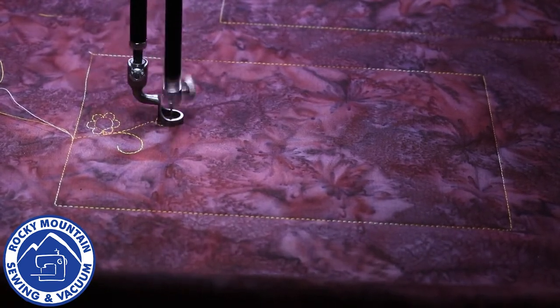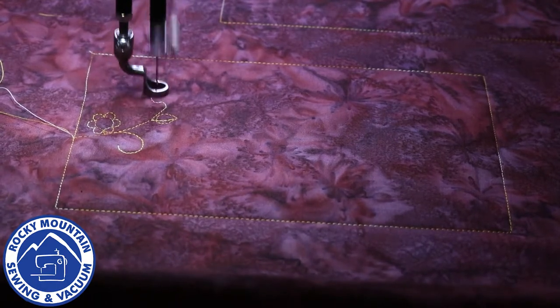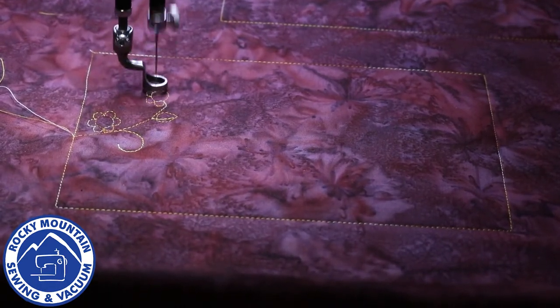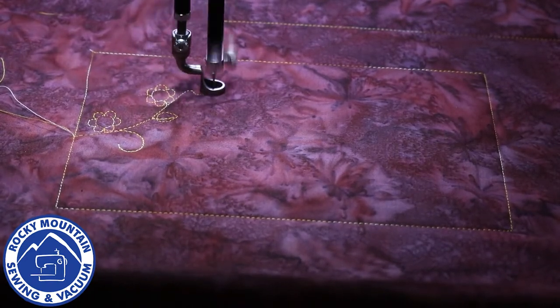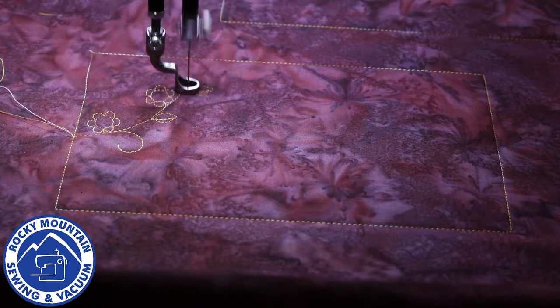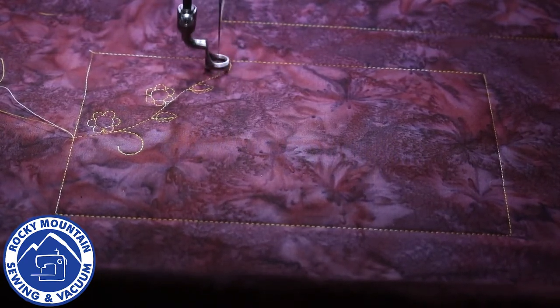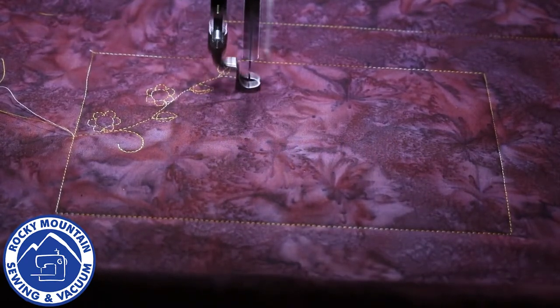So a couple cool things that you can't see because we've got you looking at the stitching and not the screen is that as it's stitching along, it's actually showing me a trace line of where it's been, so that if something happens like a thread breaks or something like that, I can catch back up to where I was in the design.